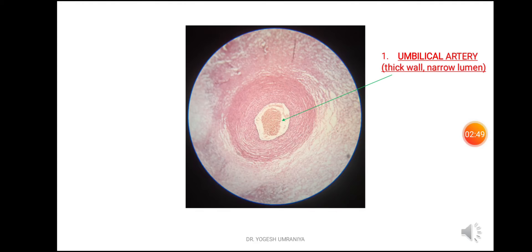In this microscopic field you can see a closer view of the umbilical artery, which has a thick wall. You can also see the internal elastic laminae. The lumen is quite narrow as compared to the umbilical vein.